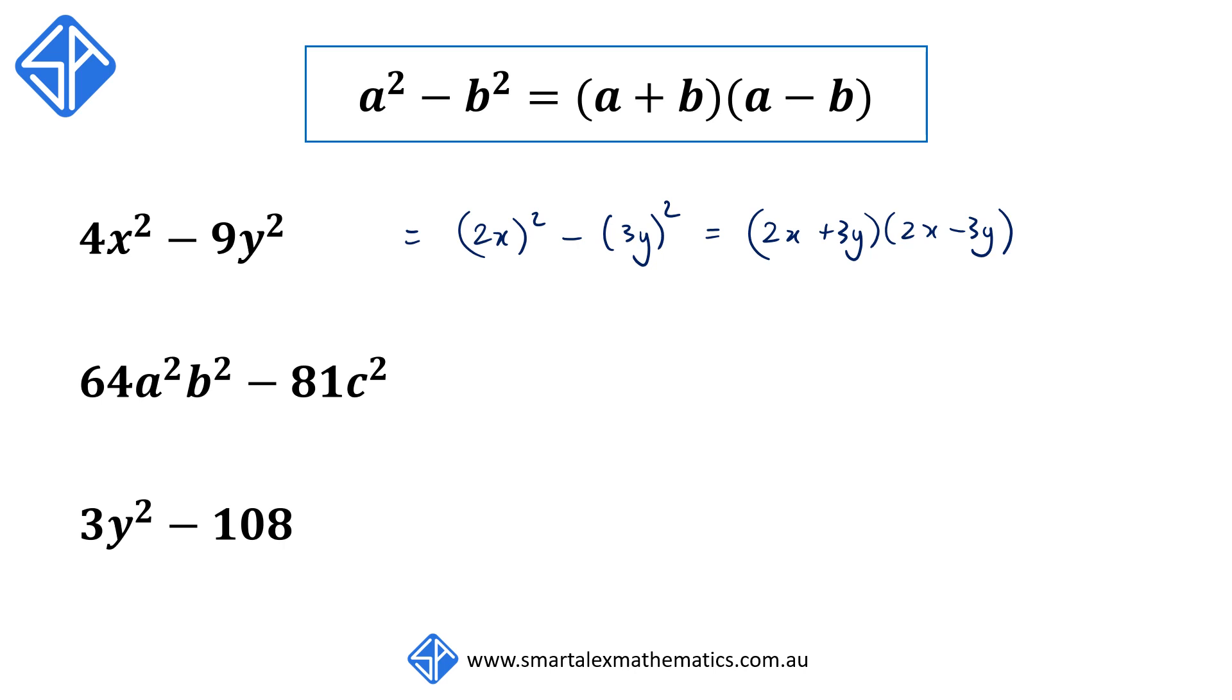Our fifth example, 64a²b² - 81c², we can rewrite this as (8ab)² - (9c)², and this factorizes to (8ab + 9c)(8ab - 9c).